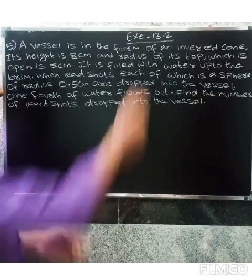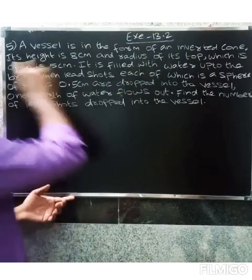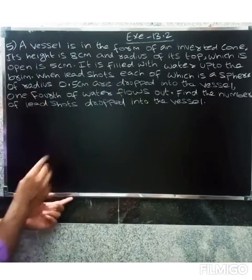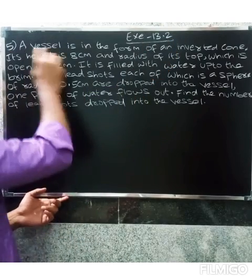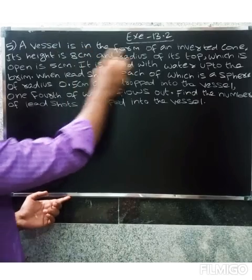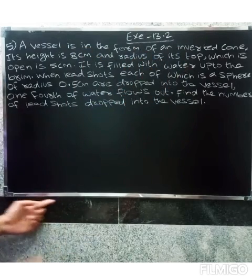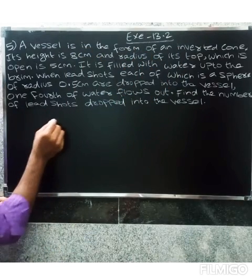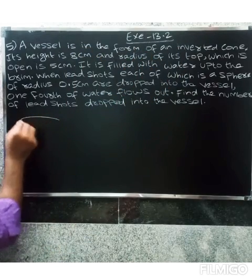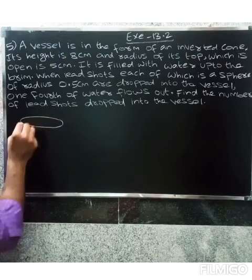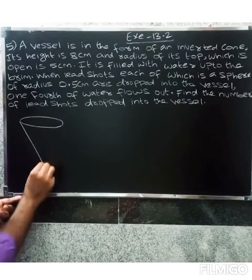Welcome friends, this is exercise 13.5. A vessel is in the form of an inverted cone — so the vessel is in the shape of an inverted cone.